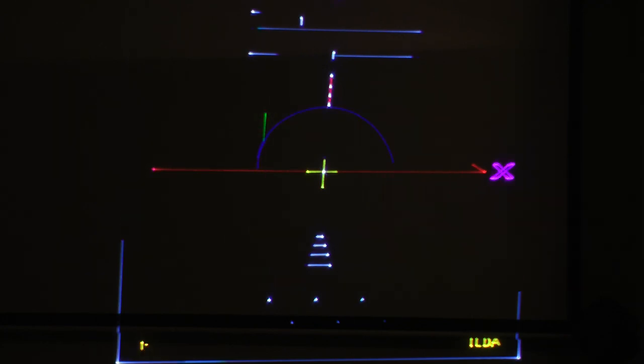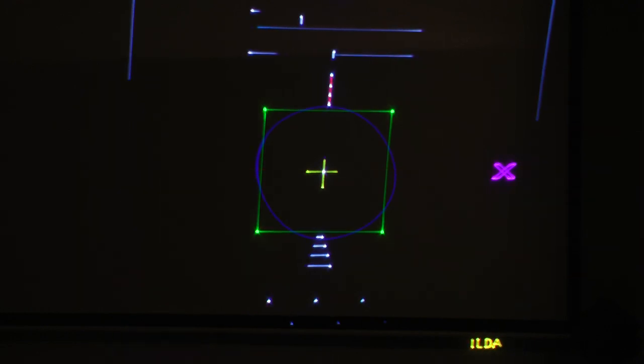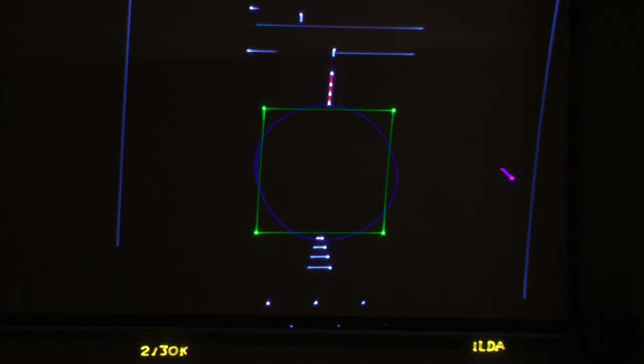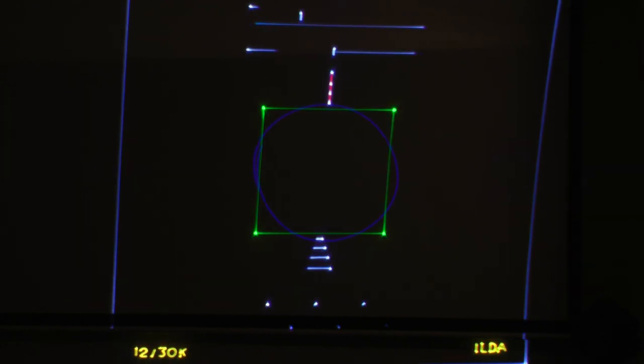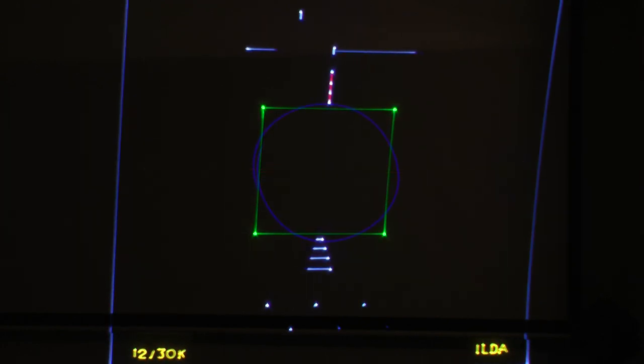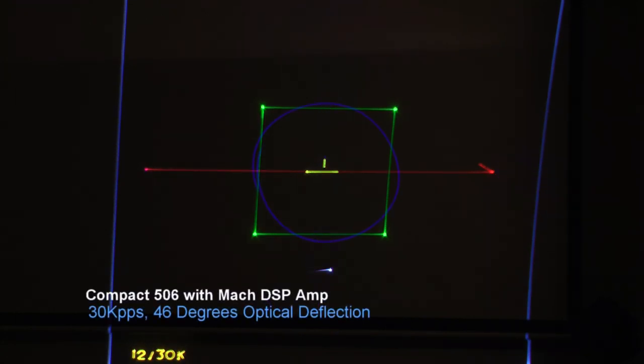You can see that. Look at that. Slight skewing of the circle. Pick it up a little bit further. That is 46 degrees optical.